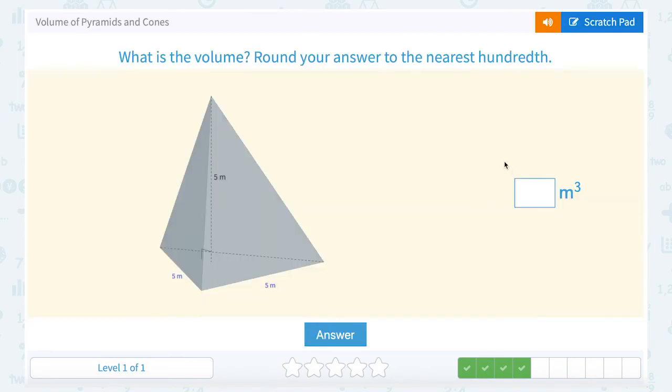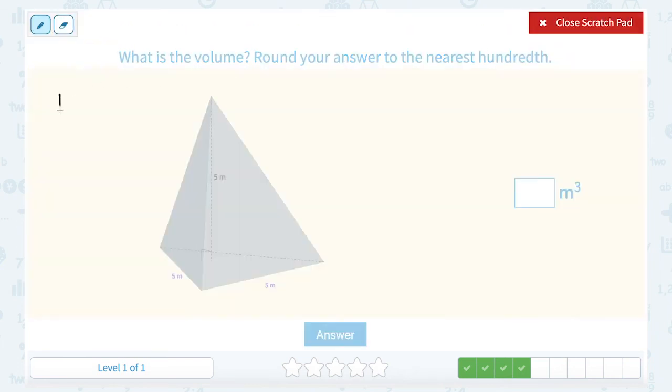Okay, so this is where you have to be really careful because it appears to be the same question. What is the volume around your answer to the nearest hundredth? But take a look at this and notice our diagram looks a little bit different. We do not have a cone here. We actually have a pyramid. Now, the formula is very similar. It's still going to be one-third the area of the base times the height. But the area of the base is not going to be a circle. You have to look at the base and determine what shape it is and use the appropriate area formula for your base.